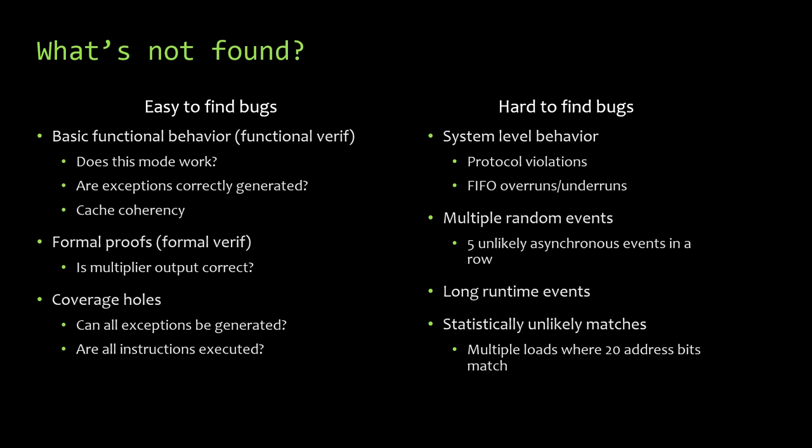But verification doesn't find other types of bugs. One big category is system-level bugs. As you remember, the system-level model runs so ridiculously slow that you simply don't get a lot of test time on it, so those are the bugs most likely to slip through the cracks. These would be bugs like two different components in the design having a protocol disagreement where they end up in an unknown state. The most common thing I've seen is that multiple seemingly random events are required to hit these bugs — things like doing a compare-exchange instruction when you get a cache probe, when an interrupt is pending, and at the same cycle the thermal sensor says the processor is too hot.